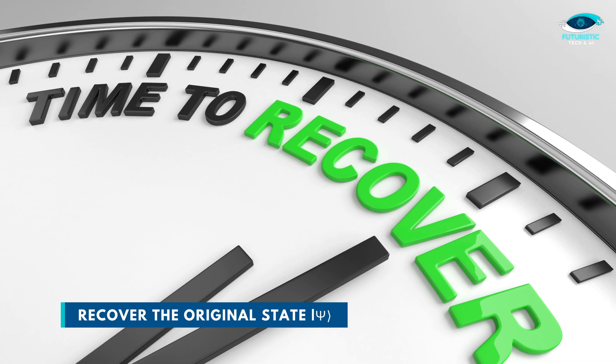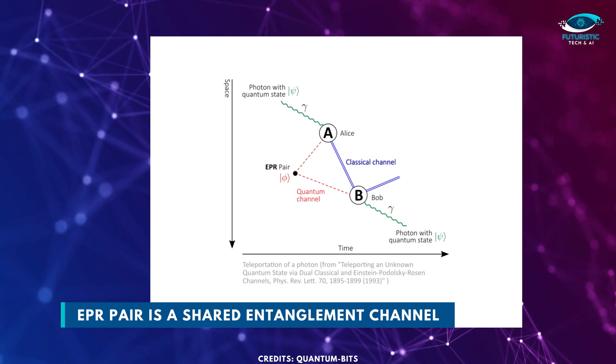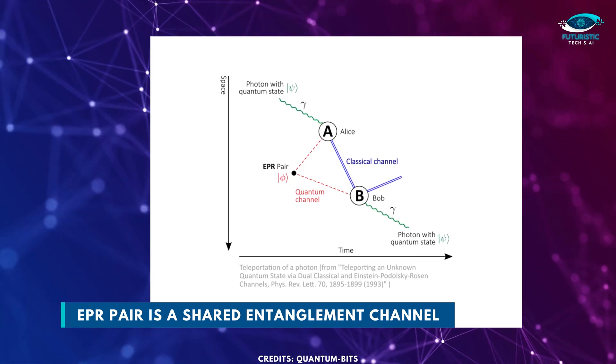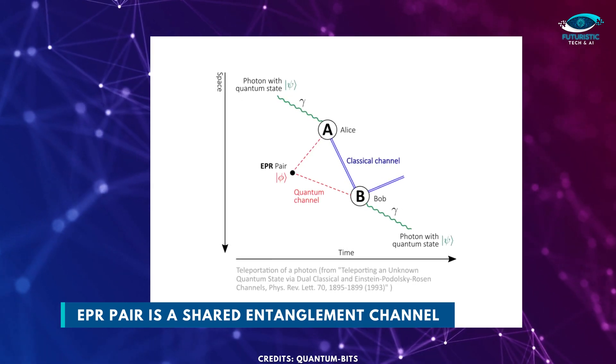Amazingly, by doing this, he can recover the original state, psi. The EPR pair is basically a shared entanglement channel between two parties. One half belongs to Alice and the other half to Bob.